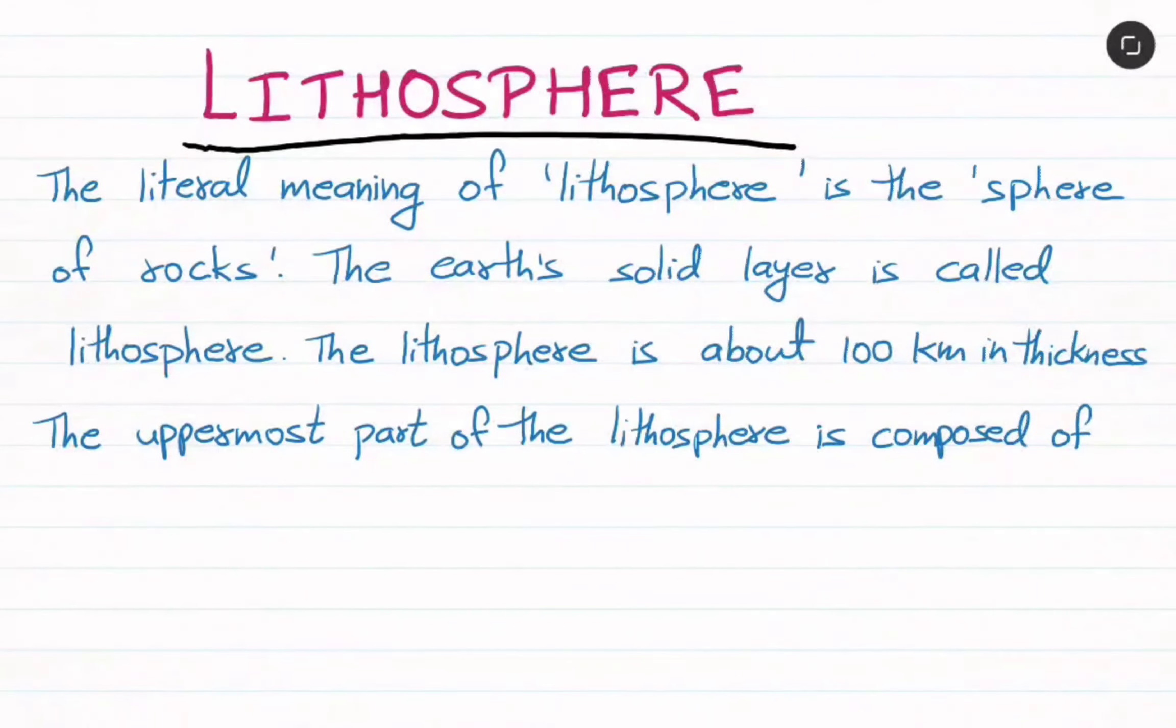The uppermost part of the lithosphere is composed of rocks rich in silica and aluminum called sial.